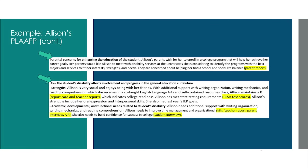Continuing on with Allison's present levels of performance section, we see the three key transition areas — education and training, employment, and independent living — as well as agency involvement, with highlighted sources of assessment results showing how this information can be taken directly to help Allison set and prioritize her goals. We also see where specific prioritized parental concerns are documented, and finally, data is used to summarize how Allison's strengths and needs impact her involvement and progress in the general education curriculum. A Word document version of this example is available in your materials.